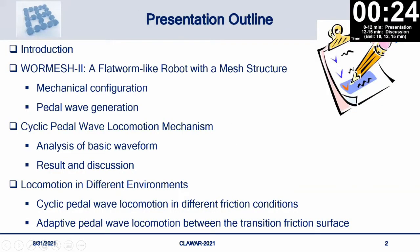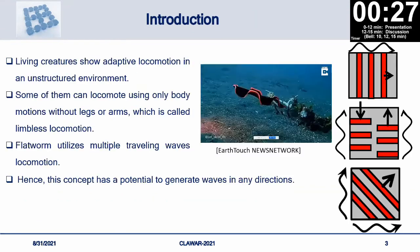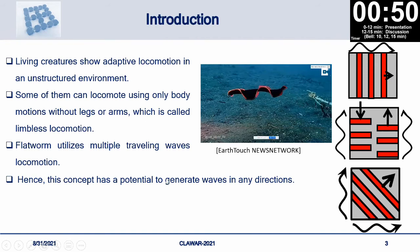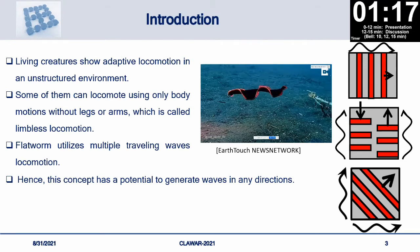This is the presentation outline. In the introduction: robots have become an important tool in day-to-day human life. One of the main tasks in robotics is moving through environments. When we consider robot applications such as disaster response, surveillance, and military use, robots need to locomote in unstructured environments. When we consider living creatures, they show much more adaptive ways of locomotion in unstructured environments. Therefore, many researchers try to develop robot systems based on living creatures.